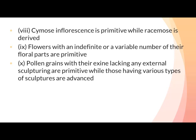Pollen grains with their exine lacking any external sculpturing are primitive, while those having various types of sculptures are advanced. The exine is the outer wall of pollen grains. Pollen grains whose exine has no design or sculpturing are primitive, while those with sculptures or designs on their exine are advanced — having evolved from non-sculptured pollen grains.